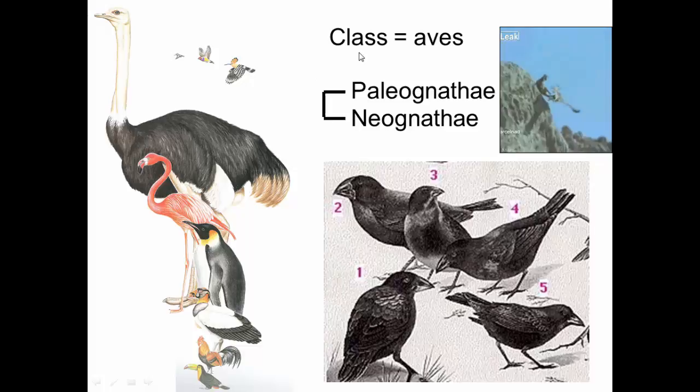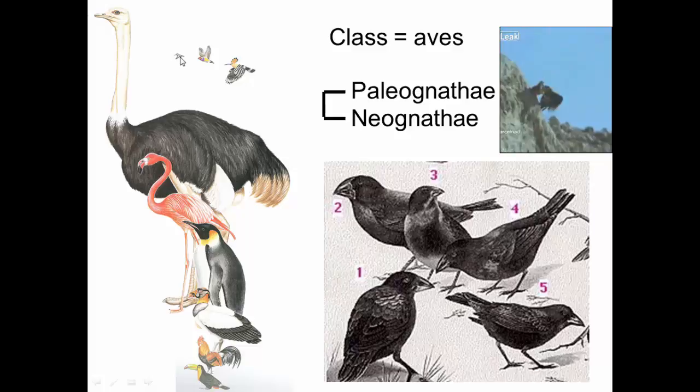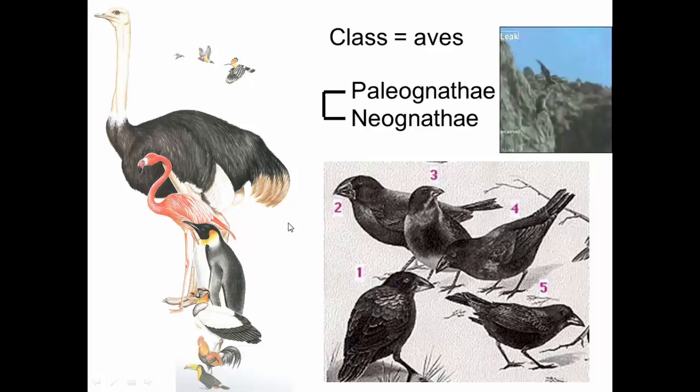What do birds look like? There are two major groups of birds: Palaeognathae and Neognathae. Birds range in size from hummingbirds, which are very small, to ostriches, which are gigantic. Palaeognathae are the ostrich-type birds, and some of the most famous from an evolutionary point of view are Darwin's finches, where you have a variety of different beak shapes within a group of closely related birds.